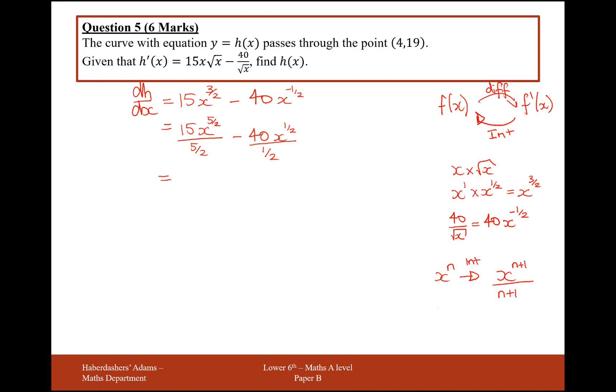Now, a little trick to divide by 5 over 2 is to treat this as 15 over 1 times, and then if we're dividing by a fraction, we kiss and flip, don't we? So it's 2 over 5. So this expression here is going to simplify to, this will cancel out, and it'll be the 3. So this would end up as a 6x to the 5 over 2. Take away, and if you divide by half, you double it, so that'll give us 80x to the half.